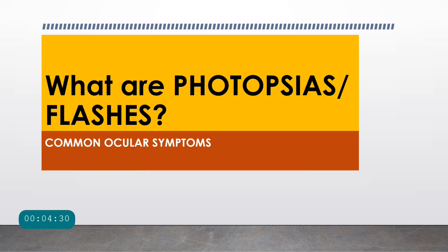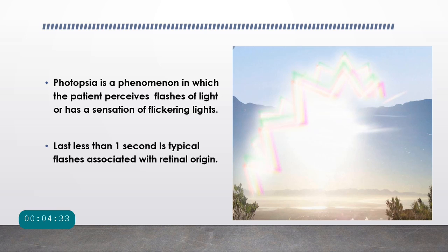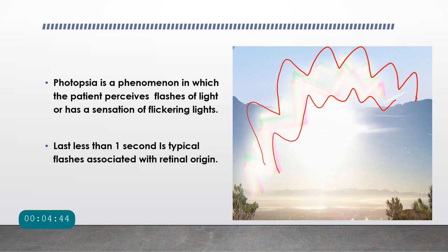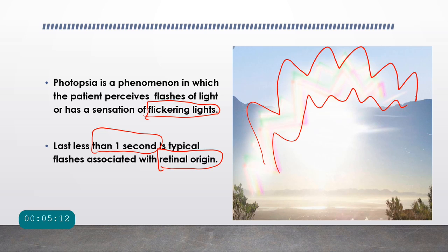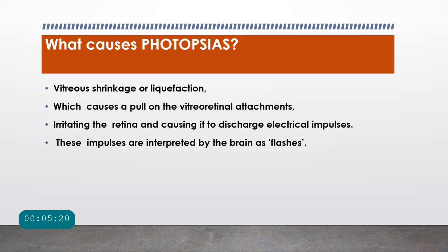Next, coming to what are photopsias or flashes. Photopsia is a phenomenon in which the patient perceives flashes of light, and these flashes are mostly curvilinear in shape. They are often described by patients as a sensation of flickering lights. Such photopsias usually indicate a pathology of retinal origin. A typical photopsia will usually last for less than one second, and they indicate that there is a problem in the retina — some abnormal pull or abnormal structure causing traction on the retina.